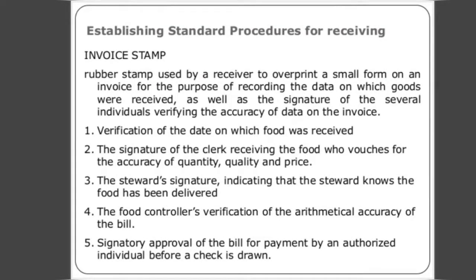Invoice stamp: a rubber stamp used by a receiver to overprint a small form on an invoice for the purpose of recording the date on which goods were received, as well as the signatures of several individuals verifying the accuracy of data on the invoice. These include: verification of the date food was received; the signature of the clerk receiving the food, who vouches for accuracy of quantity, quality, and price; the steward's signature indicating the steward knows the food has been delivered; the food controller's verification of the arithmetical accuracy of the bill; and signatory approval of the bill for payment by an authorized individual before a check is drawn.